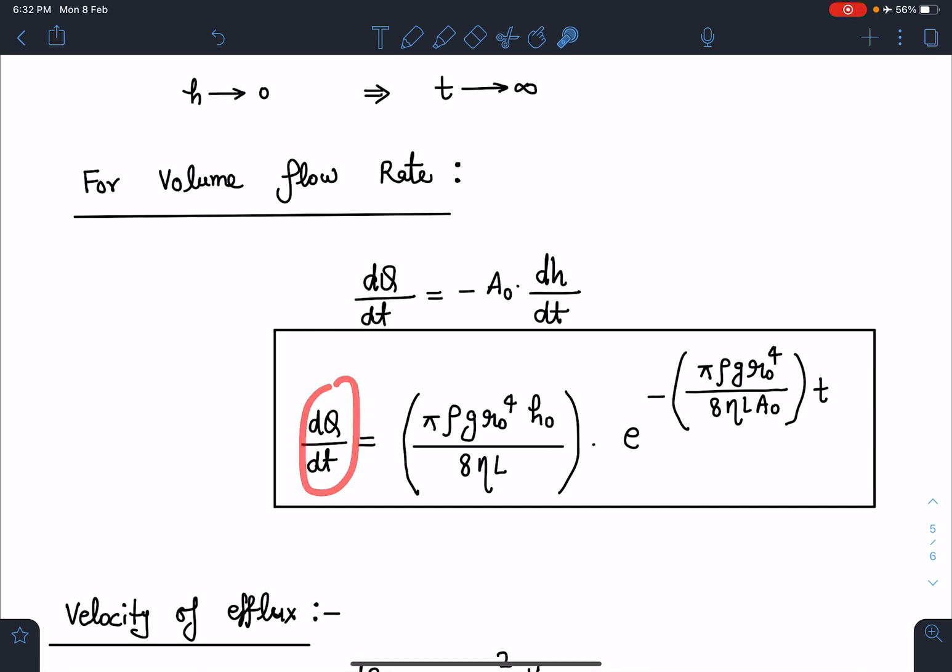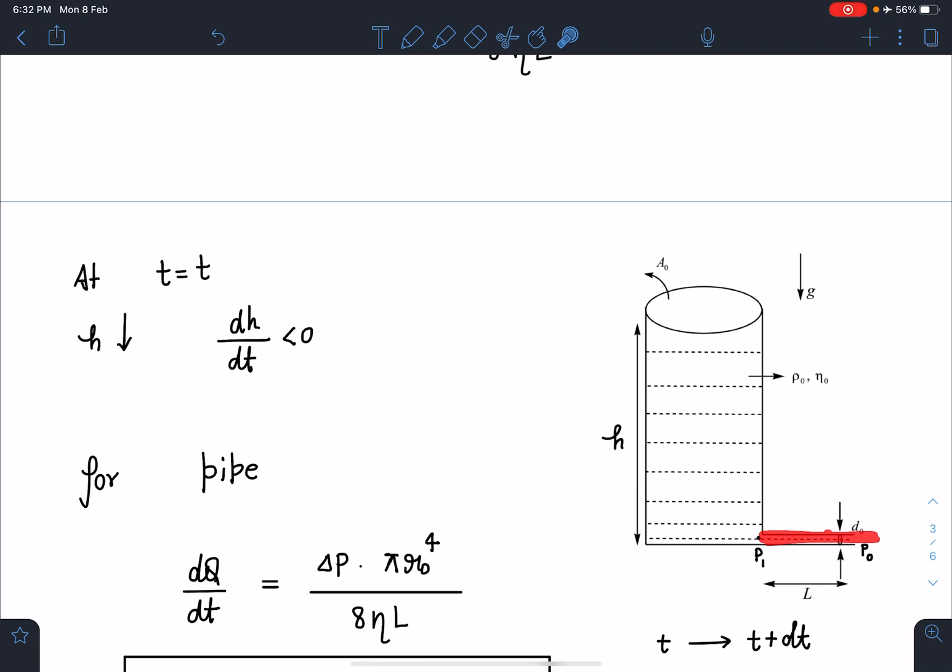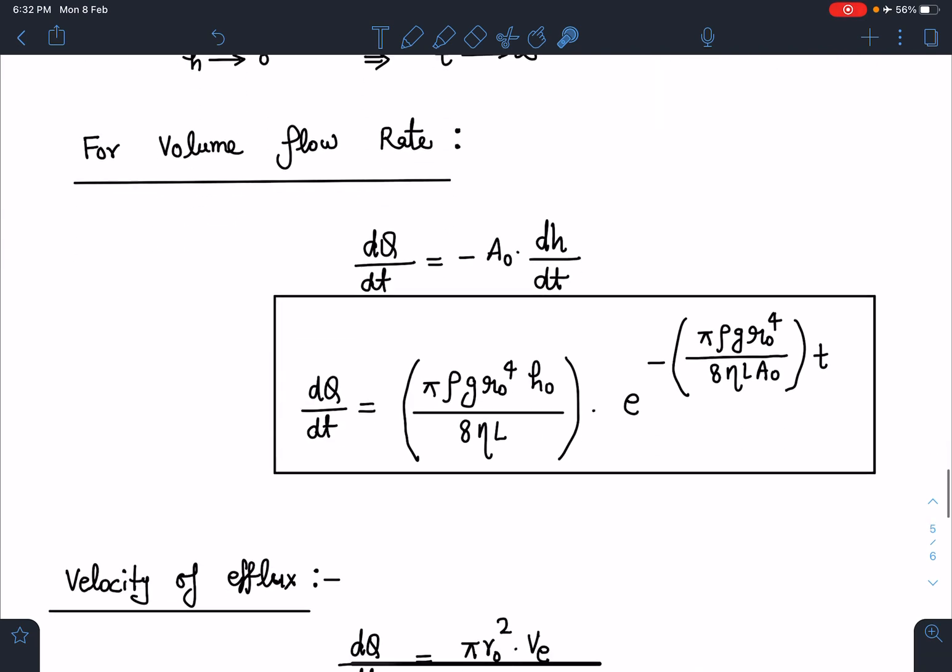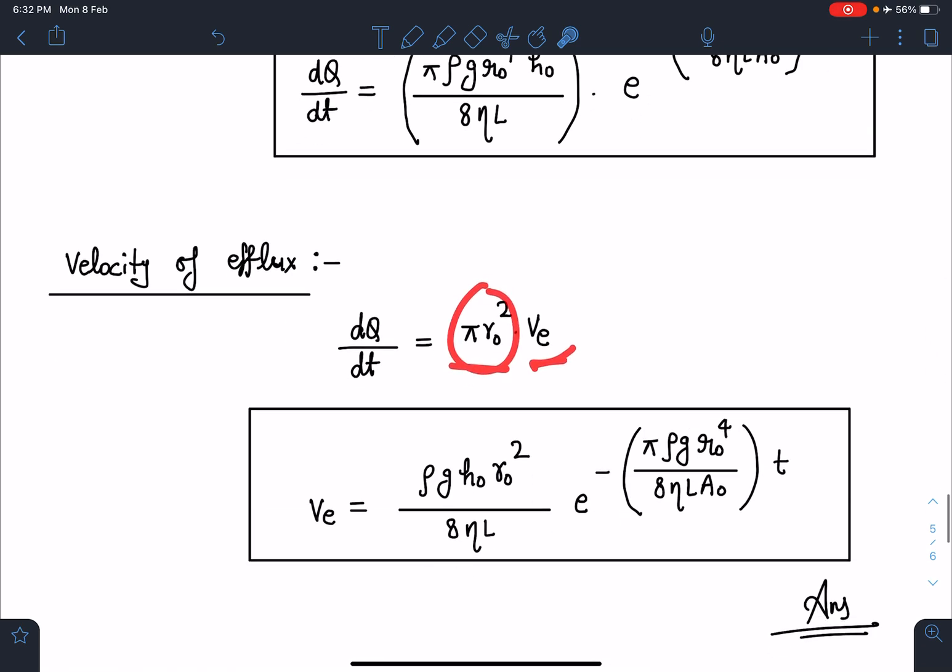Similarly, velocity of efflux: now we have volume flow rate, so volume flow rate in the vertical part in this bigger cross section area and in this part are going to be same. Here I can write this as A×v, cross section area into v, that's going to be the volume flow rate. So this dQ/dt = πr² × ve.